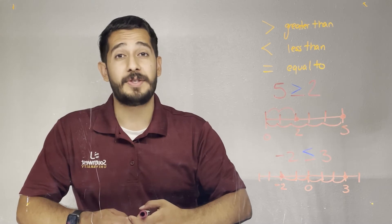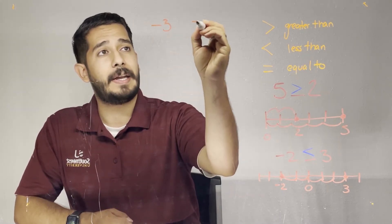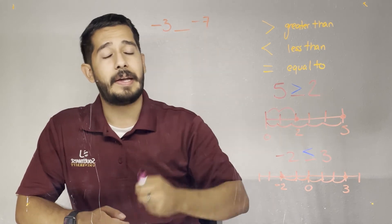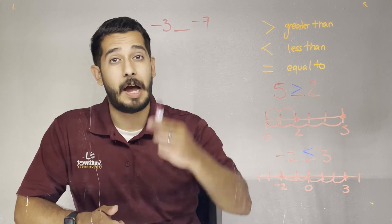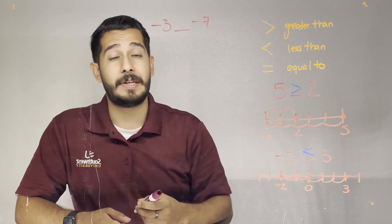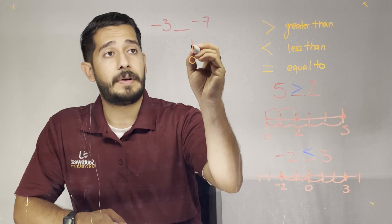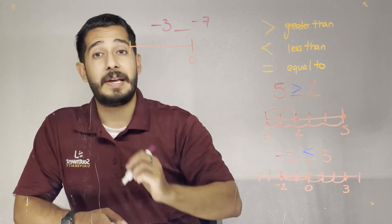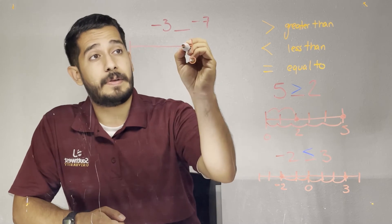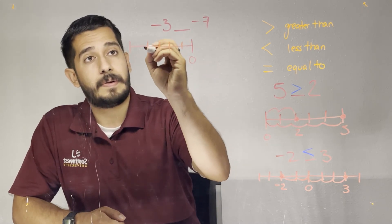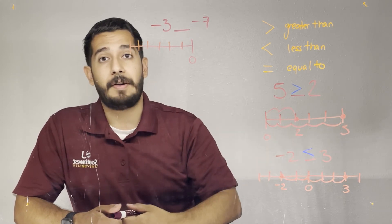Another example involving two negative numbers: negative three and negative seven. We're trying to find which of these two numbers is the greatest. I'm going to go ahead and place those on the number line. Starting at zero, I'm only going to place tick marks towards the left side since I have two negative numbers, and then I'm going to find those two numbers on my number line.